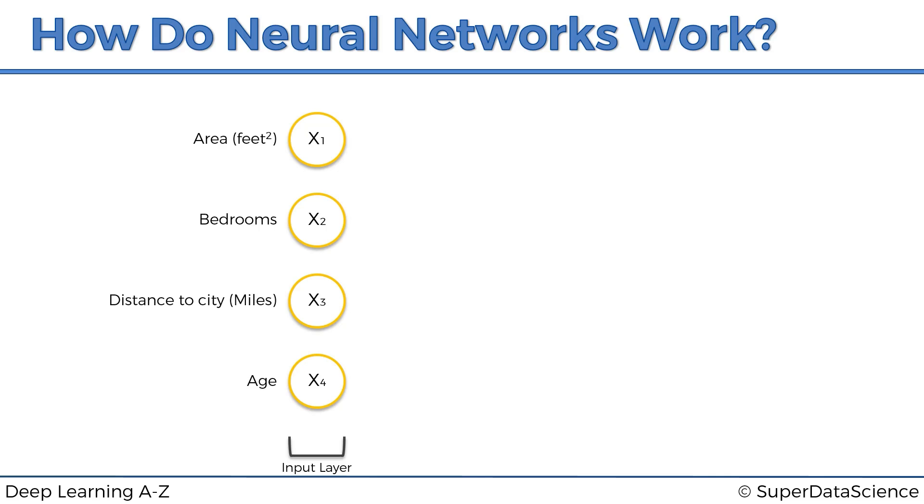Now, of course, there are probably way more parameters that define the price of a property. But for simplicity's sake, we're going to look at just these four. Now, in its very basic form, a neural network only has an input layer and an output layer, so no hidden layers. And our output layer is the price that we're predicting. So in this form, what these input variables would do is they would just be weighted up by the synapses and then the output layer will be calculated, or basically the price will be calculated and we get a price.